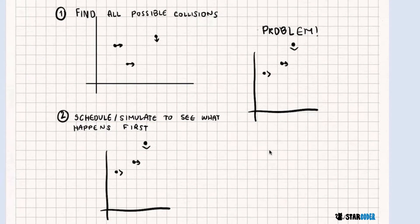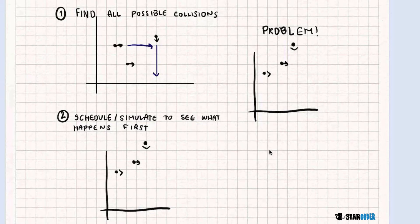In this solution, what we're actually going to do is we're going to first find all possible collisions. What this means is we're going to say: if this cow is going to move here, and this cow is going to move here, we know there are going to be collisions at certain points. So the solution for this example would be that this cow moves on forever, and then these two would stop right here.